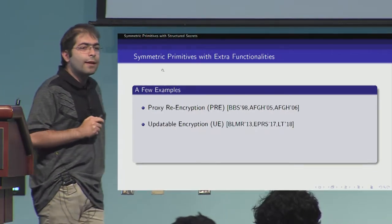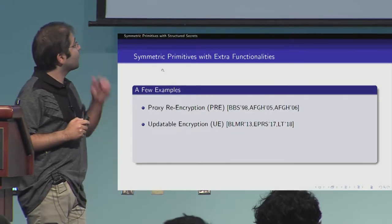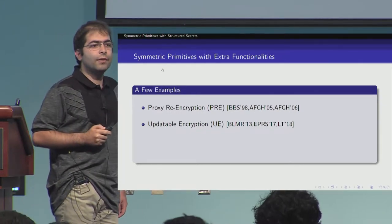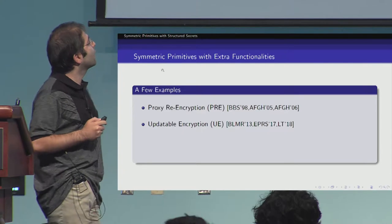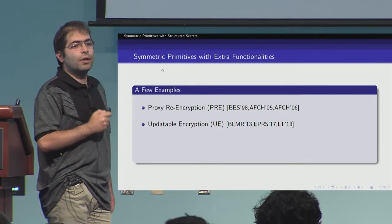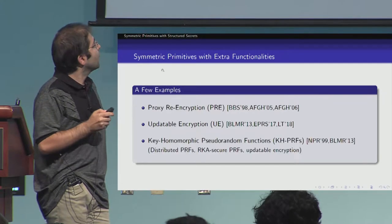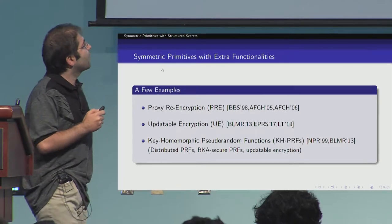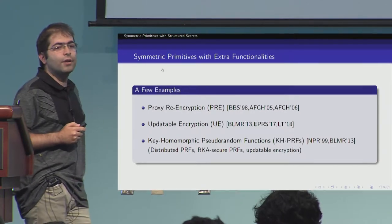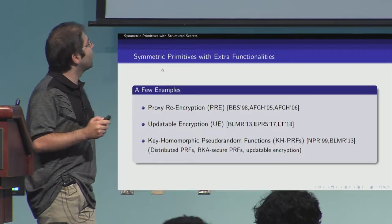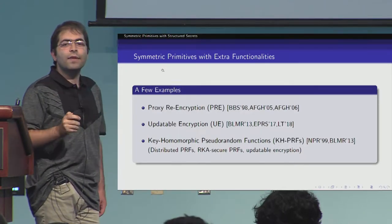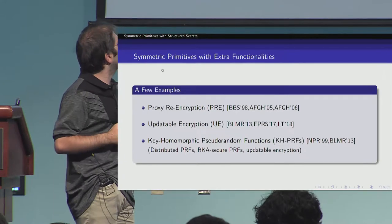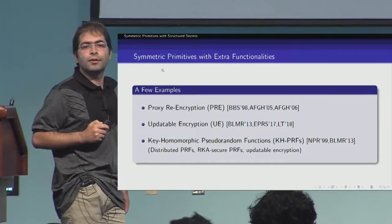A more recent example is updatable encryption, which was formally defined by Blaze et al. in 2013. Recently we have seen variants of this primitive with relatively strong security guarantees known as post-compromised security, proposed by Lehmann and Taqman in 2018. At a more fundamental level, there is also a primitive called keyhomomorphic pseudo-random functions, implicitly introduced by Naur, Pincus, and Rheingold in 1999 and formally defined by BLMR13. This primitive has further applications such as distributed PRFs, PRFs secure against related key attacks, and updatable encryption.